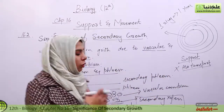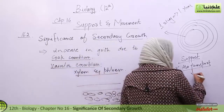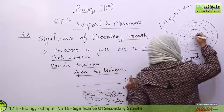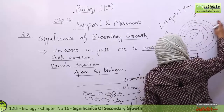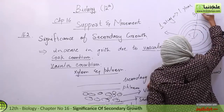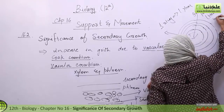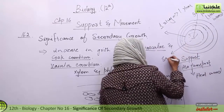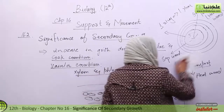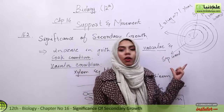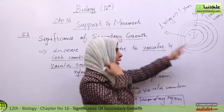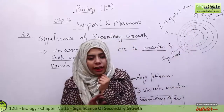When we talk about the trunk or stem portion, there is an inactive inner portion known as hardwood, which does not conduct water. The outer portion which actively conducts water is known as sapwood. So there are two types of wood: sapwood, which actively participates in the conduction of water, and hardwood, which is the inner inactive, totally dead portion.